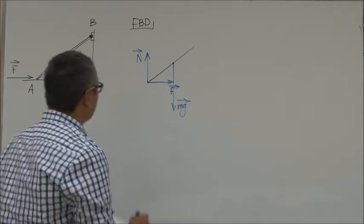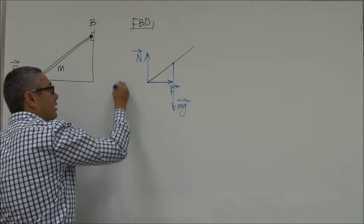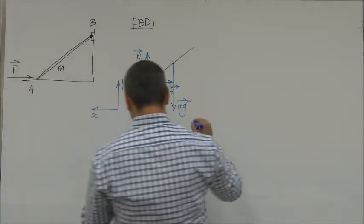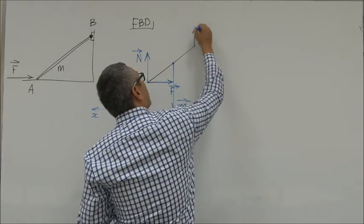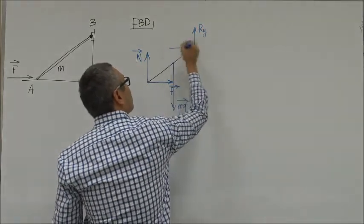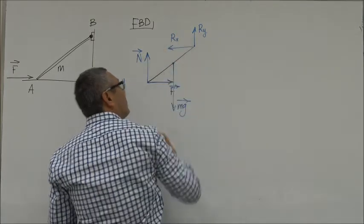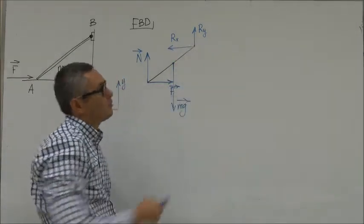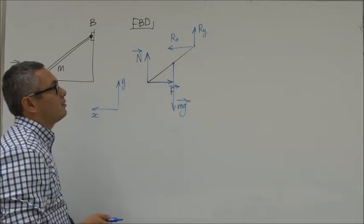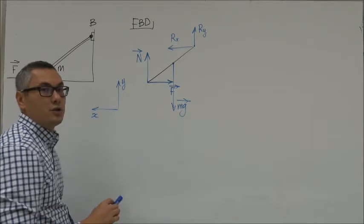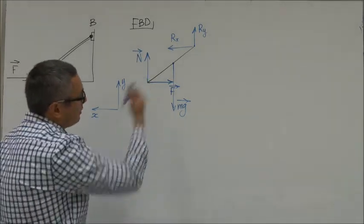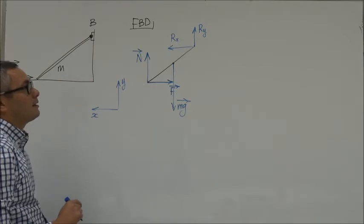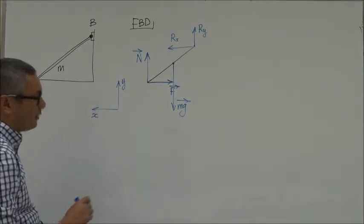We don't know the actual direction of the hinge reaction force, but we know it has X and Y components. Let's introduce axes: Y pointing upwards and X pointing to the left. The hinge force has an Ry component and an Rx component. Depending on the problem, it could turn out that one component points in the reverse direction — if so, its calculated value will simply be negative. Let's start by directing them in the positive directions.